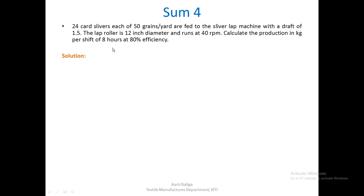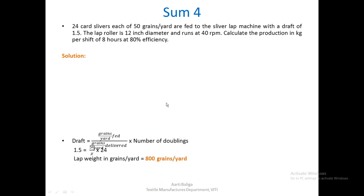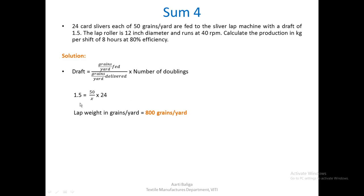The next problem: 24 card slivers each of 50 grains per yard are fed to the sliver lap machine with a draft of 1.5. The lap roller is 12 inches diameter and runs at 40 rpm. Calculate the production in kgs per shift of 8 hours at 80% efficiency. First, using the draft formula, we calculate the delivered lap weight as 800 grains per yard.